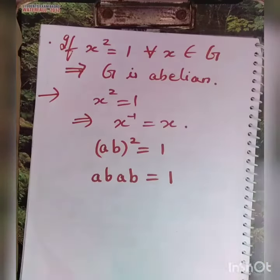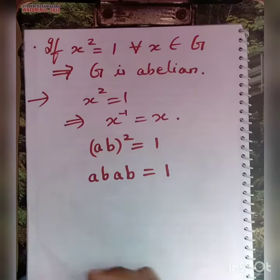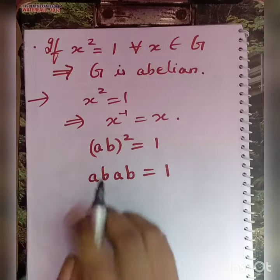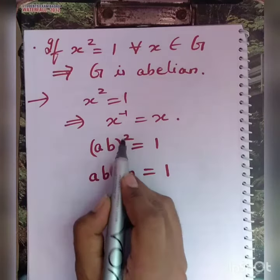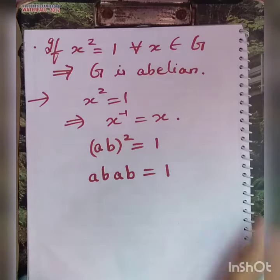Now we have to prove that for any two elements a and b in G, ab = ba. So we have ab is an element of the group, so (ab)² will be 1. This can be expanded as abab = 1.